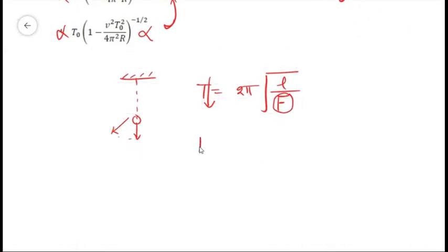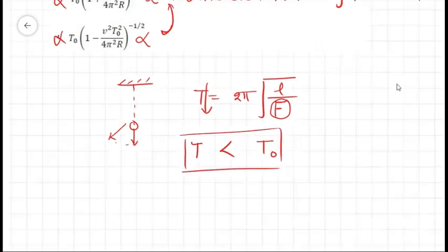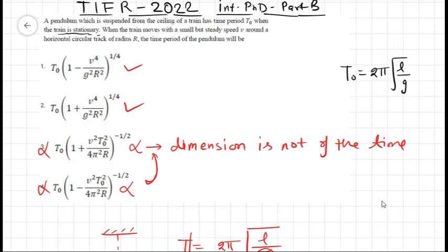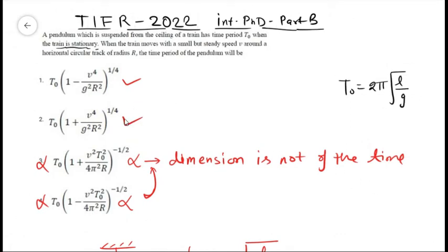The options should be such that the time period of the simple pendulum when the train moves on a circular track should be smaller than when the train is stationary. Using this fact, this option can be ruled out because here the time period is greater than T₀, since the term in the parenthesis is greater than 1.